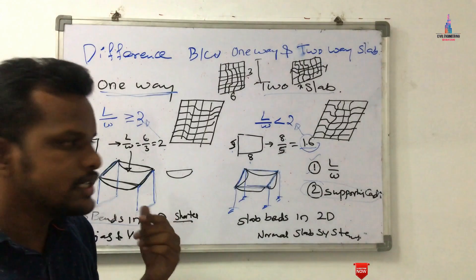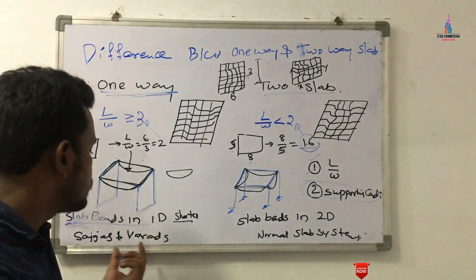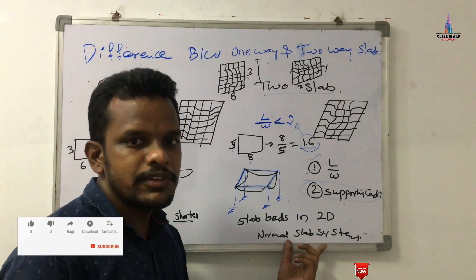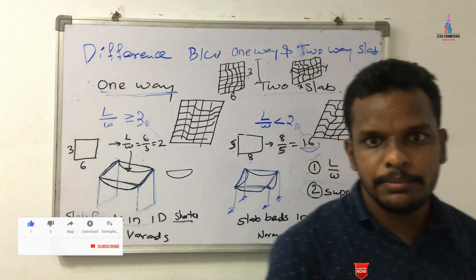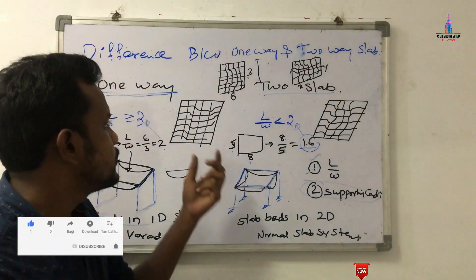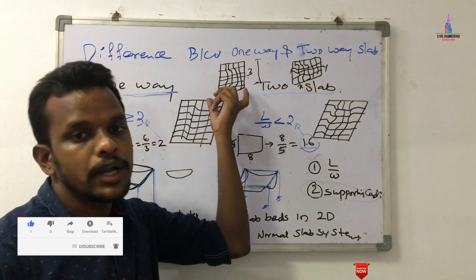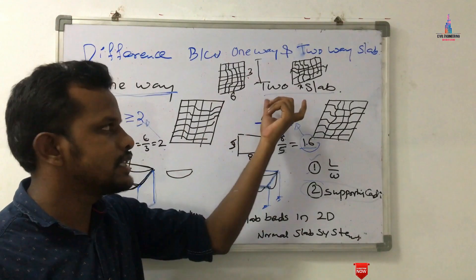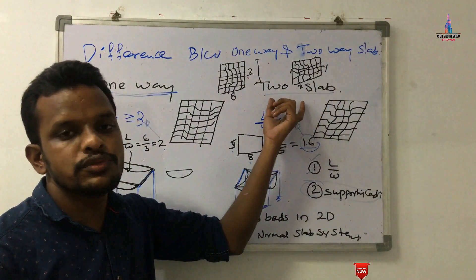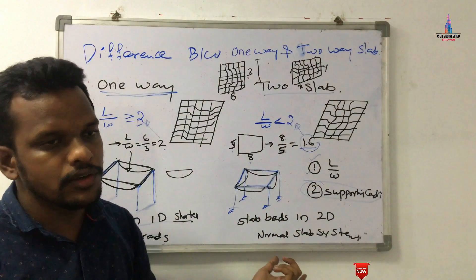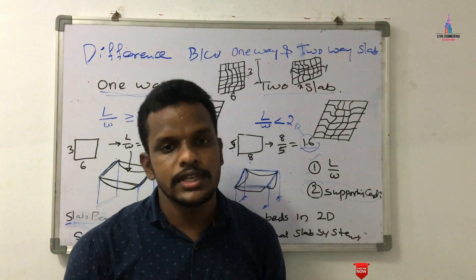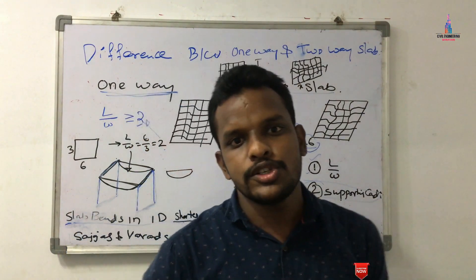The slab bends towards the shorter span in one-way, and bends in two directions in two-way slab systems. Staircases and verandas come under one-way slab systems, and normal building slabs for G+1, G+2 construction come under two-way slab systems. For reinforcement, cranked bars are provided towards the shorter span for one-way slabs, and in both horizontal and vertical directions for two-way slabs. Please post your queries in the comment box below. Thank you.